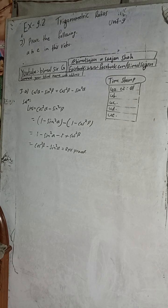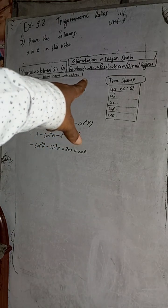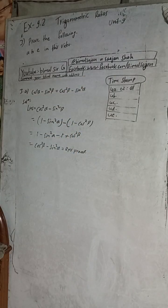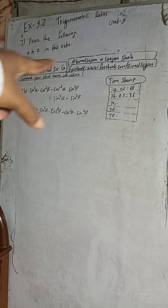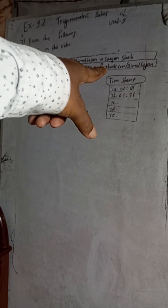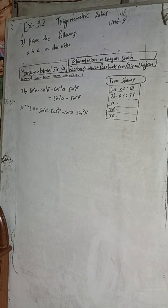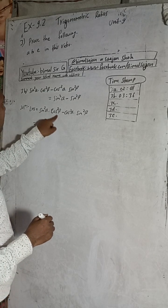I will pause the video to write question number 3b. The timestamp for 3b is 3 minutes 36 seconds. The LHS part I have written here is: sin²α · cos²β − cos²α · sin²β — we have to prove this.